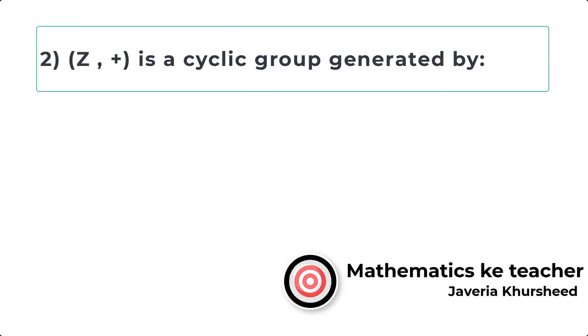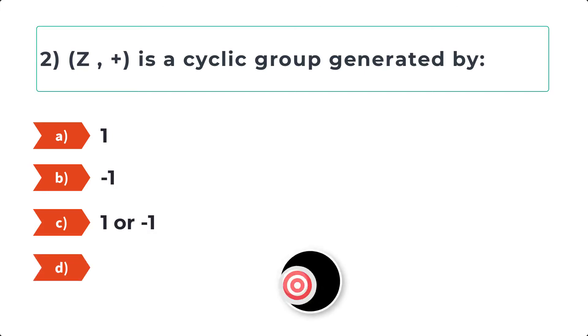Question 2: Z with respect to addition is a cyclic group generated by: A, 1; B, minus 1; C, 1 or minus 1; D, None of these.